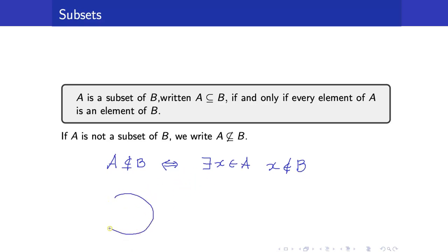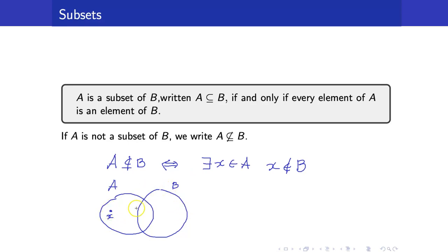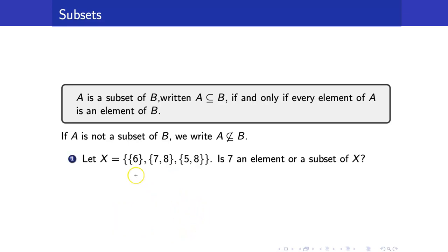Using Venn diagrams, A ⊄ B can be illustrated as follows: A and B overlap or A extends outside B, meaning there is an element x in A that is not in the set B.